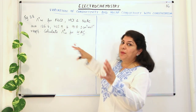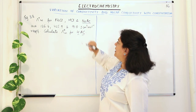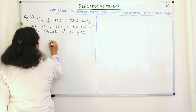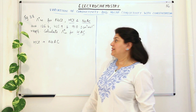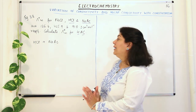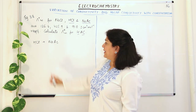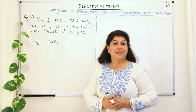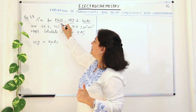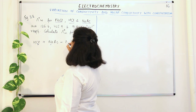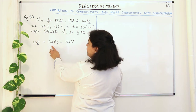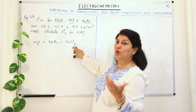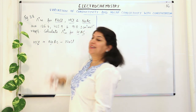Acetate is present in sodium acetate and hydrogen is present in HCl. So add HCl plus NaAc. When we add them, we get hydrogen and acetate, but we also get chloride and sodium which we do not want. To remove their contributions, subtract NaCl — which contains exactly sodium and chloride. So: Λ°m(HAc) = Λ°m(HCl) + Λ°m(NaAc) − Λ°m(NaCl). Subtracting their limiting molar conductivities removes sodium and chloride, leaving only hydrogen and acetate.